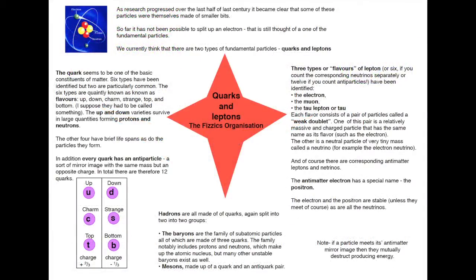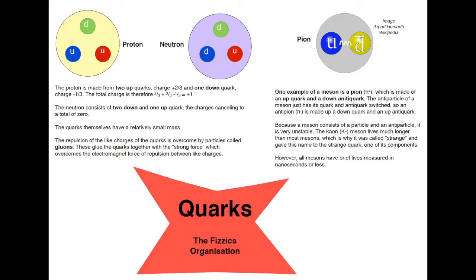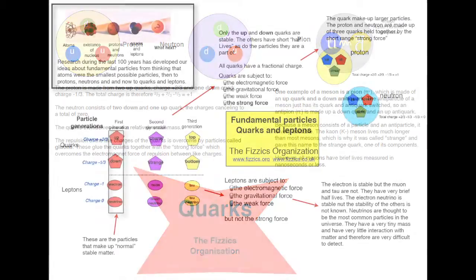When they were first identified, we thought that protons and neutrons were fundamental particles, that they couldn't be broken down any further. Now we know that is not so, that protons and neutrons are comprised of smaller particles. Perhaps chief amongst those are quarks.